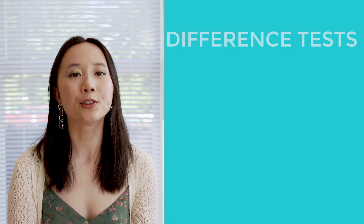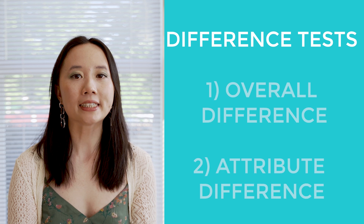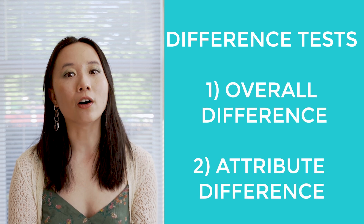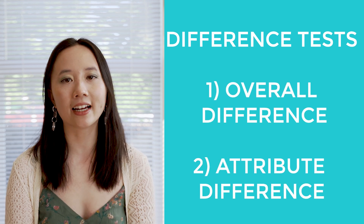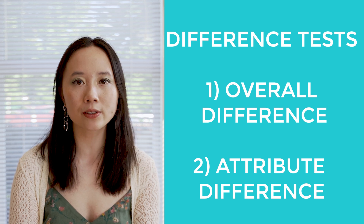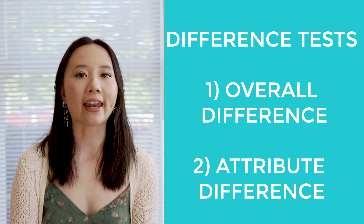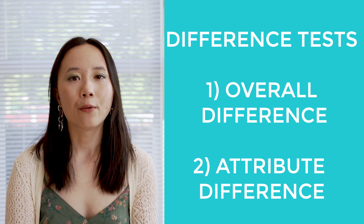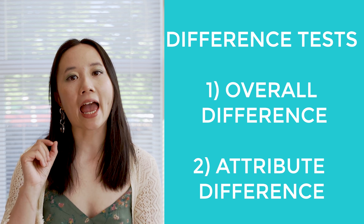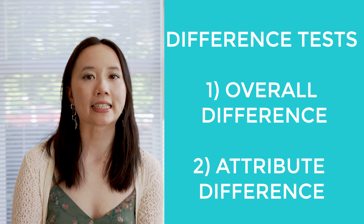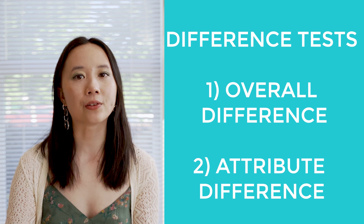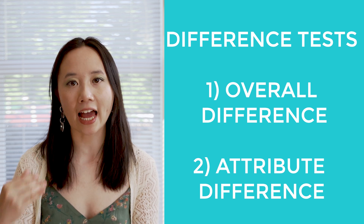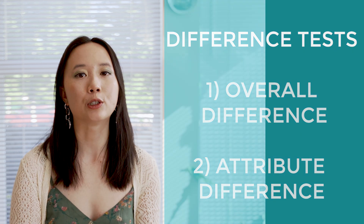These tests are divided into two categories. The first is overall difference — we want to know if there's just any kind of difference between two samples. Or an attribute difference, where a specific attribute is singled out, such as bitterness, and we want to know if there's a difference just in that attribute for two samples.